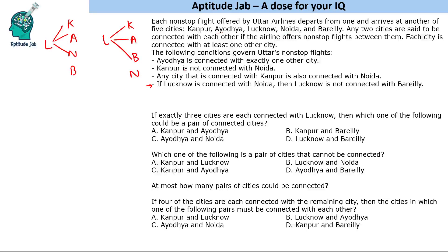So these 3 cities have to be connected with Lucknow. Now we know that Ayodhya is connected with exactly one city, and that is Lucknow. So Ayodhya cannot be connected with any other city. We have eliminated 2 of the possibilities. Any city that is connected with Kanpur is also connected with Noida. So if Lucknow is connected with Kanpur, there should also be a connection between Lucknow and Noida. But in the case without Noida, that condition is not satisfied, so that case is not possible. That leaves only one valid connectivity: Lucknow is connected with Kanpur, Ayodhya, and Noida — not with Bareilly.